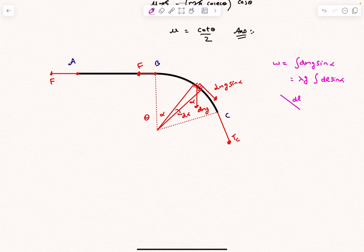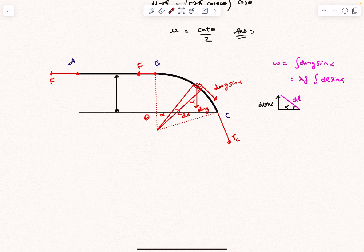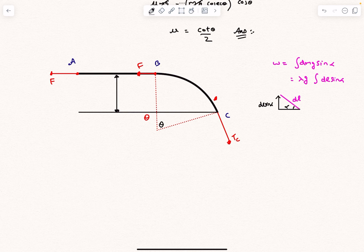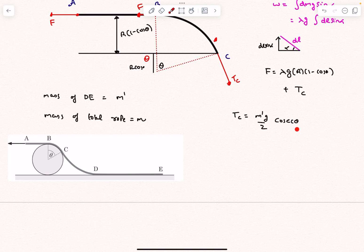Now this term over here, dL sin α: let's say this is our element whose length is dL zoomed in, and the normal to the element makes an angle alpha with the vertical, which means the tangent would make an angle of alpha with the horizontal. So dL sin α is like the vertical projection of this length dL. So if you integrate dL sin θ throughout this element BC, what you'll essentially get is this vertical projection of this part BC. And as this angle is theta, we can say this length is R cos theta. So the vertical projection is nothing but R times (1 - cos θ). So finally we can say F is nothing but λG times R(1 - cos θ) plus T_C. Now T_C is simply M' G by 2 cosec θ as we determined earlier.